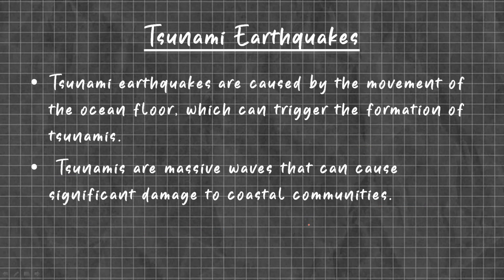Tsunami earthquakes are caused by movement of the ocean floor, which can trigger the formation of tsunamis. Tsunamis are massive waves that can cause significant damage to coastal communities. The same type of earthquake which occurs in the ocean floor or sea floor is called a tsunami earthquake, because it creates a tsunami in the ocean or sea.